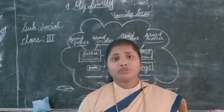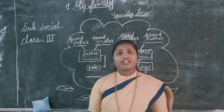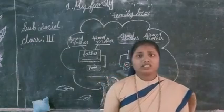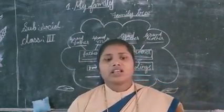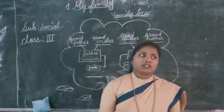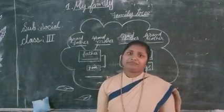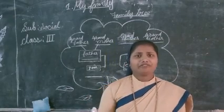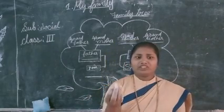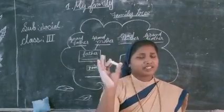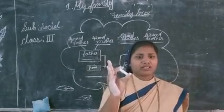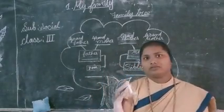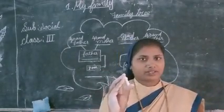So once again I ask you: there are three types of families — nuclear family, joint family, and single parent family. In a nuclear family, we see that it is a small family in which only the parents live with their children.